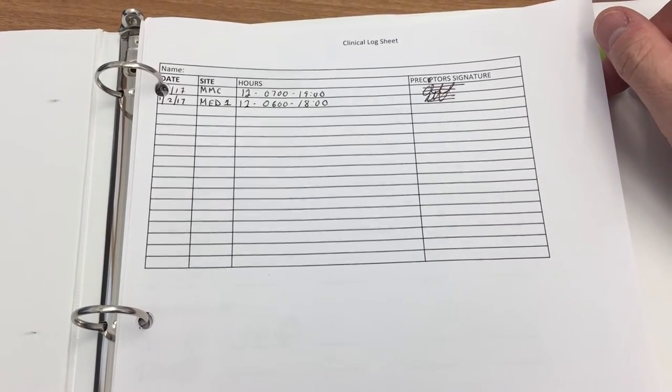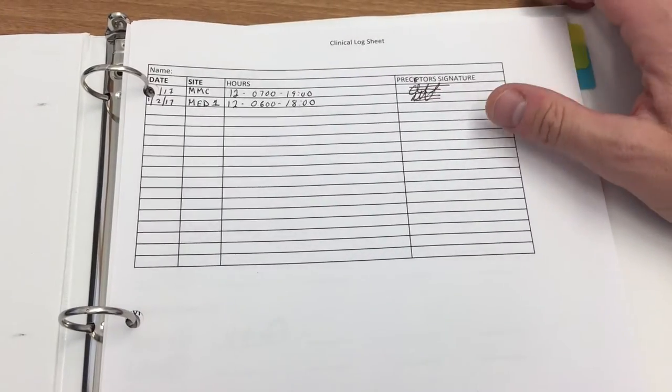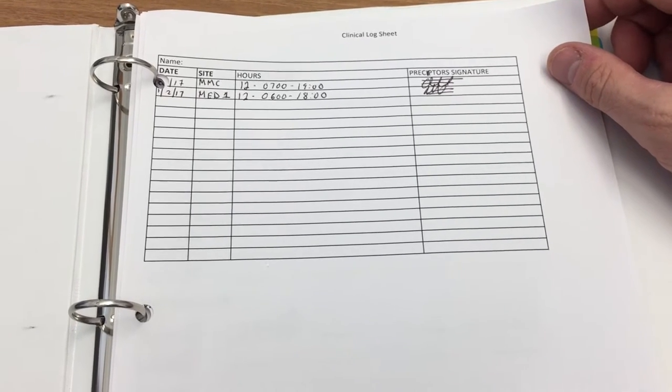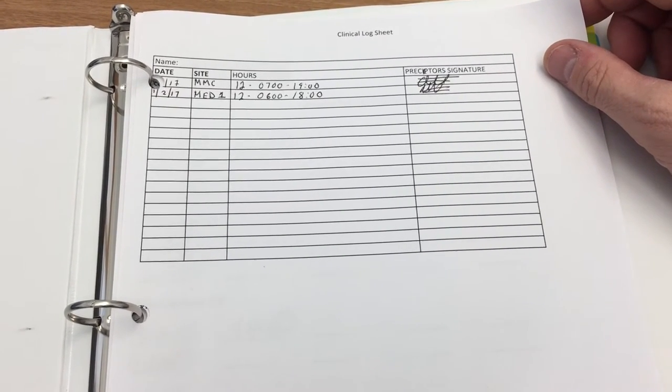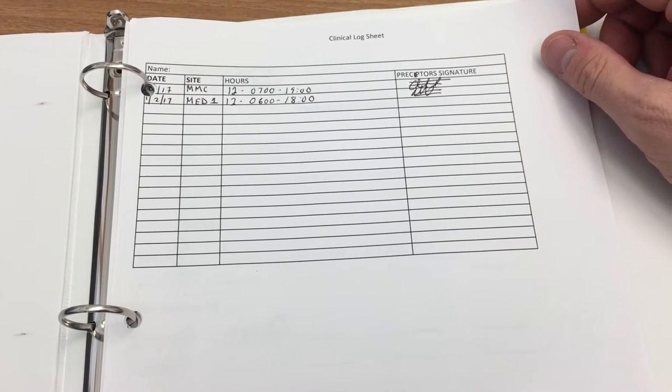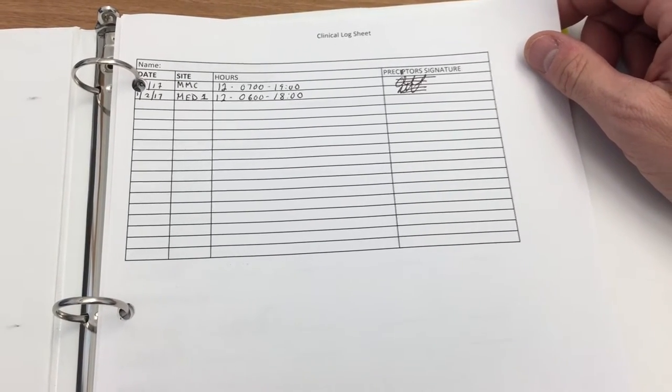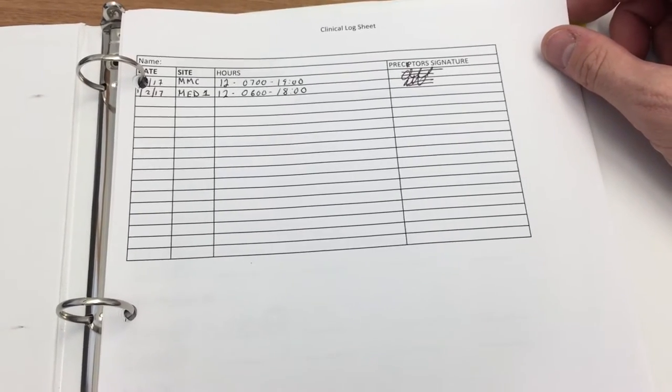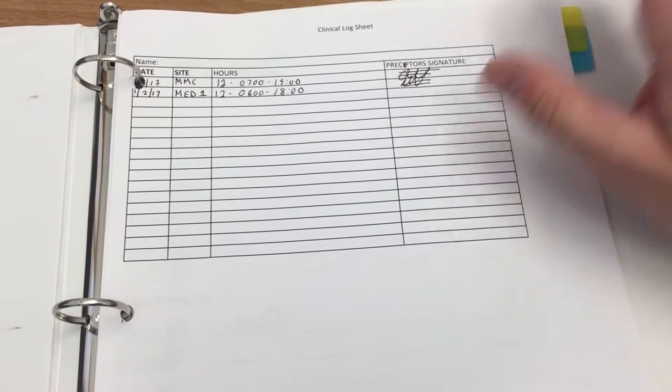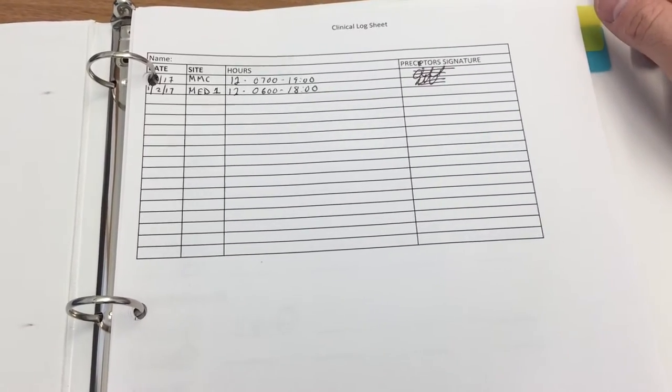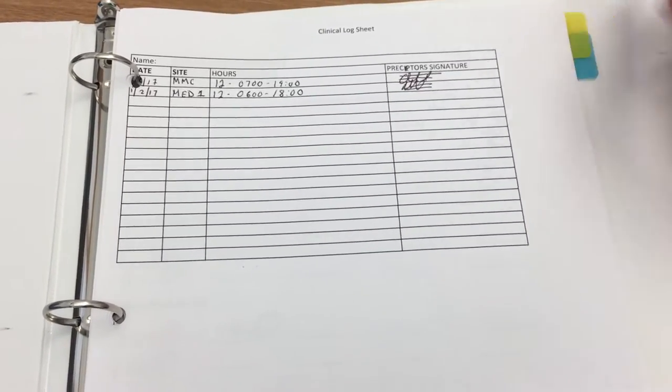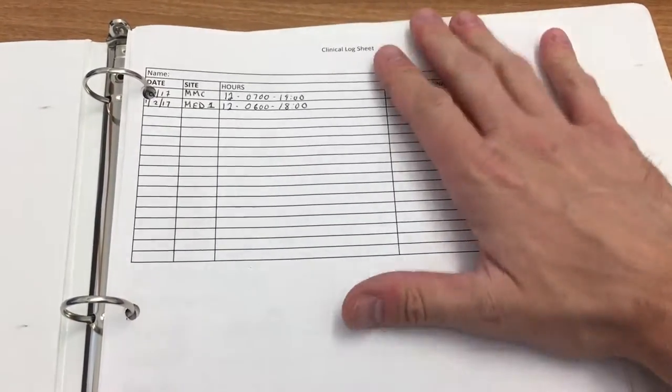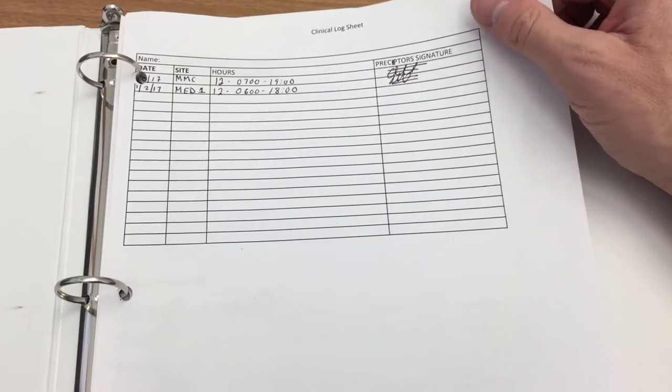And then you need to have a minimum of 18 hours within the hospital environment, Memorial Medical Center. Most of that will be in the emergency room, but it certainly isn't limited. Just remember those are your minimum hours because you also have certain skills and patient contact requirements that need to be met. If you don't meet those requirements, you'll have to continue to gain experience until you can meet those benchmarks as well. But this will be the very first page of your clinical portfolio, this log sheet.